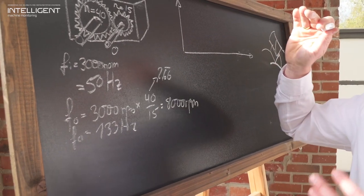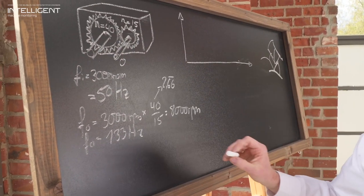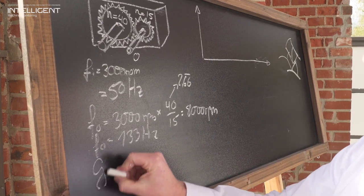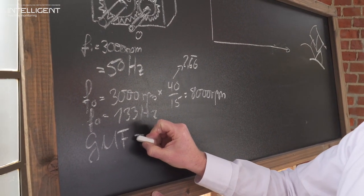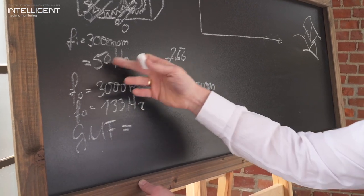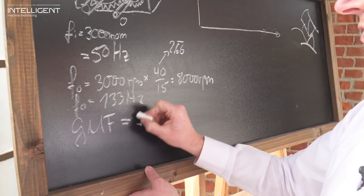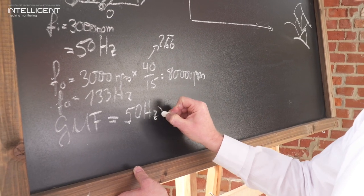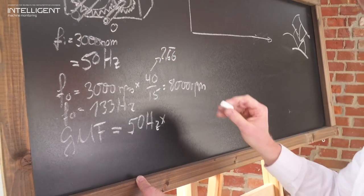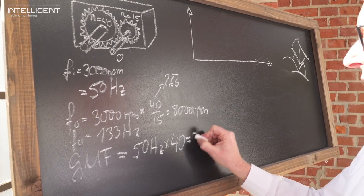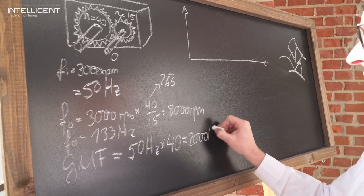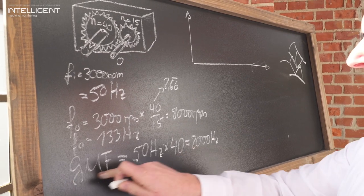So these are my speeds, and looking at the gear mesh frequency we have the turning speed of the shaft, so we have the 50 Hertz and multiply that with the number of teeth of 40 for the appropriate shaft, which results in a 2000 Hertz gear mesh frequency.